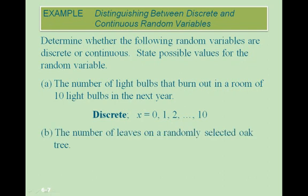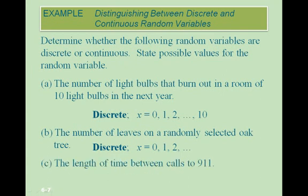For Part B: the number of leaves on a randomly selected oak tree. Again, this is discrete or countable — we can have 0, 1, 2, or more leaves. For Part C: the length of time between calls to 9-1-1. This would be continuous, as this time would be a value greater than 0 and can take on an infinite number of values.